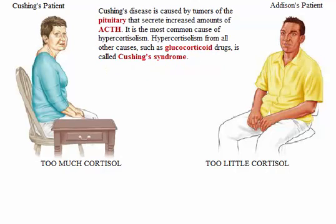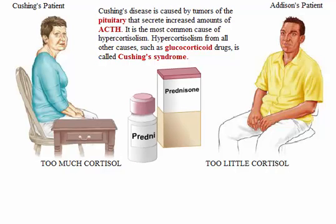Cushing's disease is caused by tumors of the pituitary that secrete increased amounts of ACTH, and is the most common cause of hypercortisolism. Hypercortisolism from all other causes, such as glucocorticoid drugs, is called Cushing's syndrome. The glucocorticoid prednisone may be prescribed for asthma, rheumatoid arthritis, other inflammatory diseases, or for immunosuppression following an organ transplant.